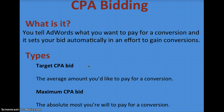You can either set up a target CPA bid, where you say you want your average to be a certain CPA — you'll pay more sometimes, you'll pay less sometimes, but it should average out to your target CPA bid. And then there's a maximum CPA bid, so if you know that you lose money after a certain CPA, you would set your maximum CPA bid so it never pays more than that for a conversion.